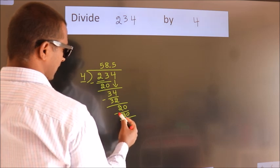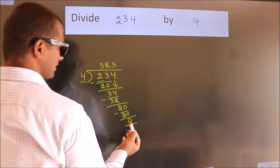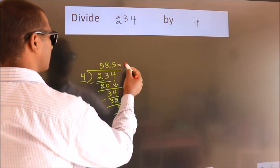Now we subtract. We get 0. We got remainder 0, so this is our quotient.